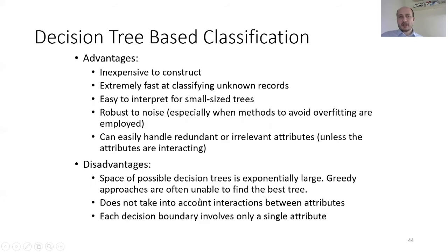The advantages of decision trees are that they are inexpensive to construct, extremely fast at classifying unknown records, easy to interpret for small-sized trees, robust to noise, and can easily handle redundant and irrelevant attributes. Disadvantages include that the space of possible decision trees is exponentially large, greedy approaches are often unable to find the best trees, they do not take into account interactions between attributes, and each decision boundary involves only a single attribute.